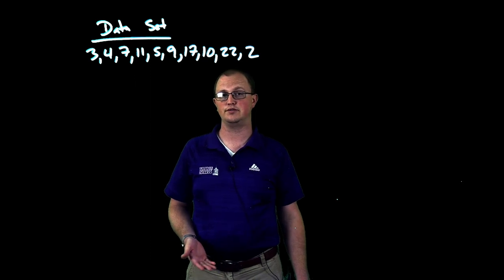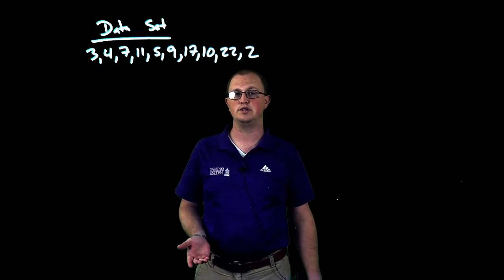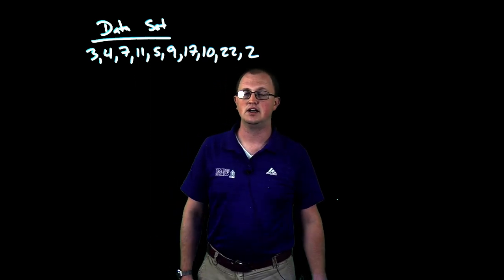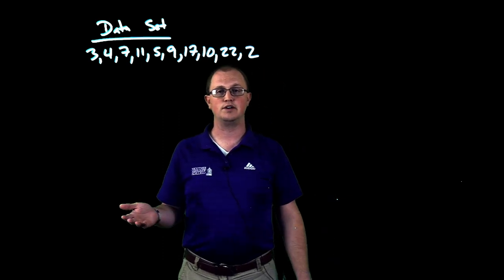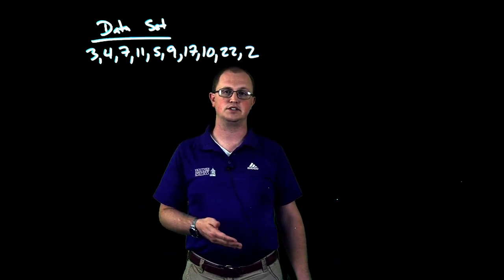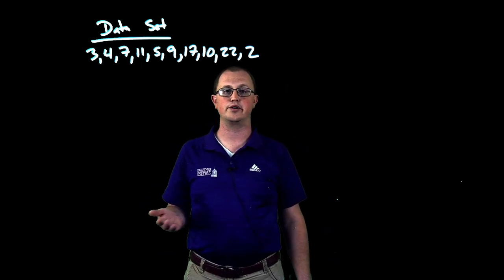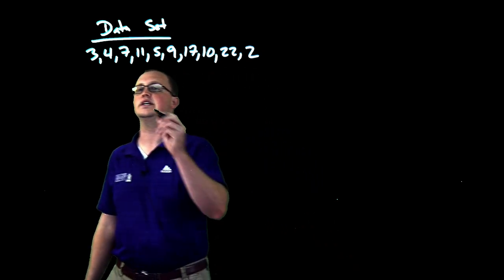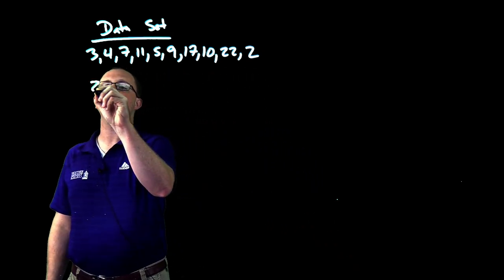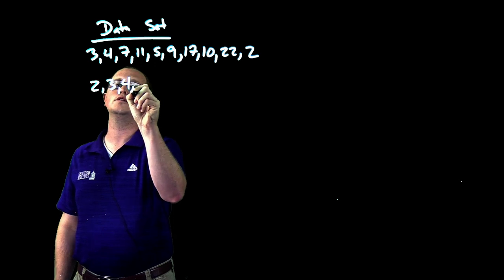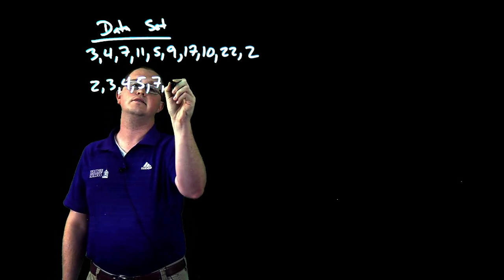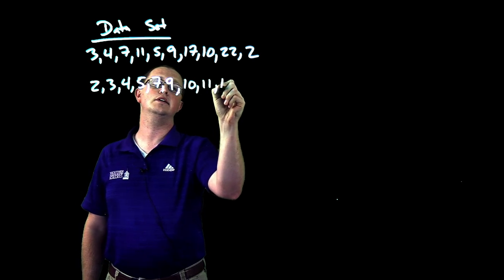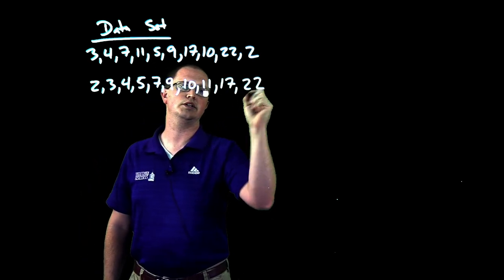This is going to be a little bit of review for what we talked about previously. The first thing we have to do when looking for medians and lower and upper quartiles is to reorder our data from smallest to largest. So reordered, we get 2, 3, 4, 5, 7, 9, 10, 11, 17, and 22.